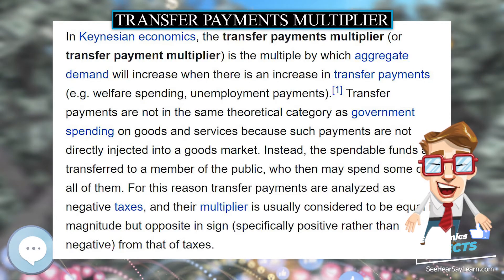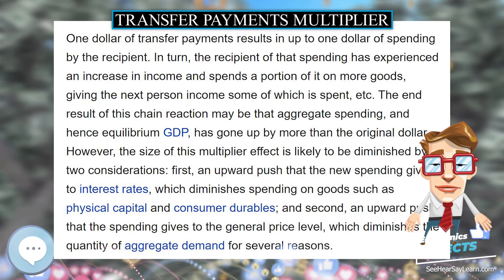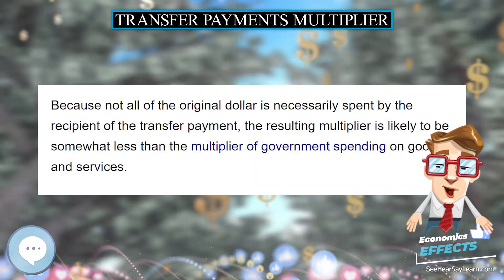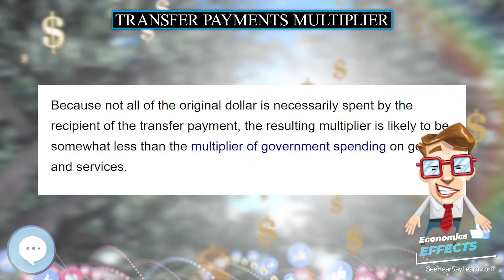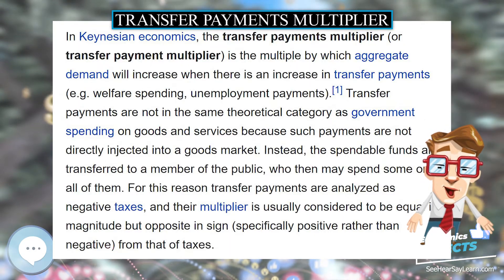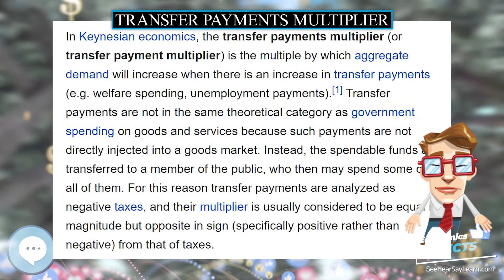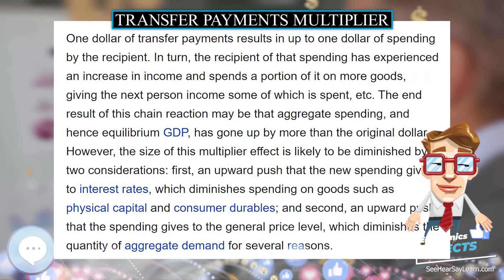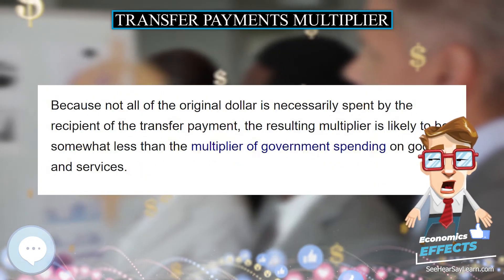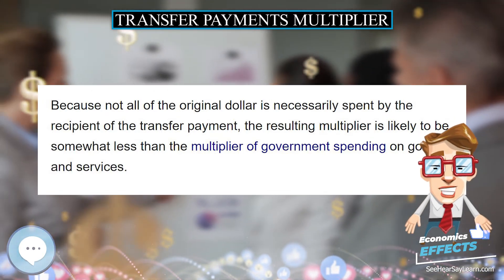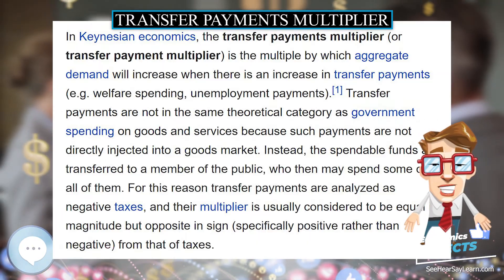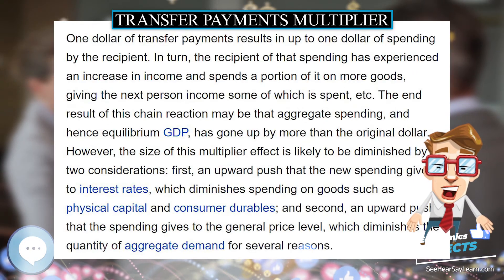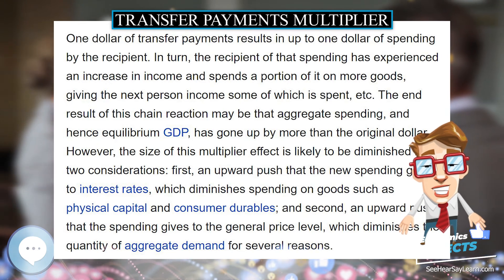However, the size of this multiplier effect is likely to be diminished by two considerations. First, an upward push that the new spending gives to the general price level, which diminishes the quantity of aggregate demand for several reasons. Because not all of the original dollar is necessarily spent by the recipient of the transfer payment, the resulting multiplier is likely to be somewhat less than the multiplier of government spending on goods and services.